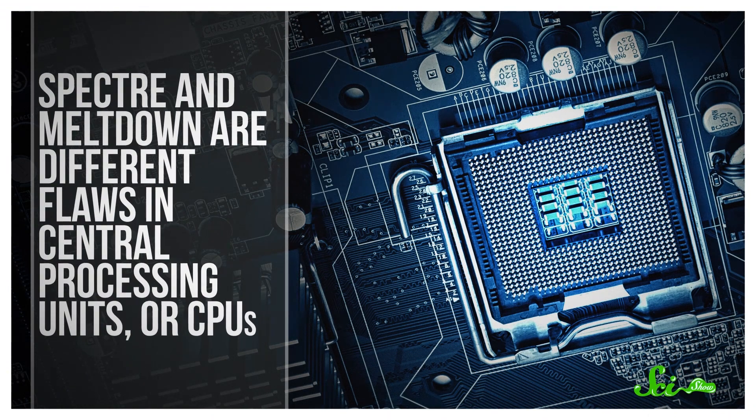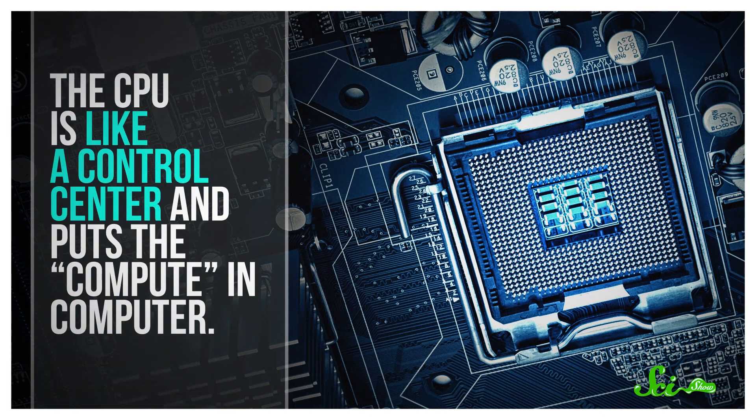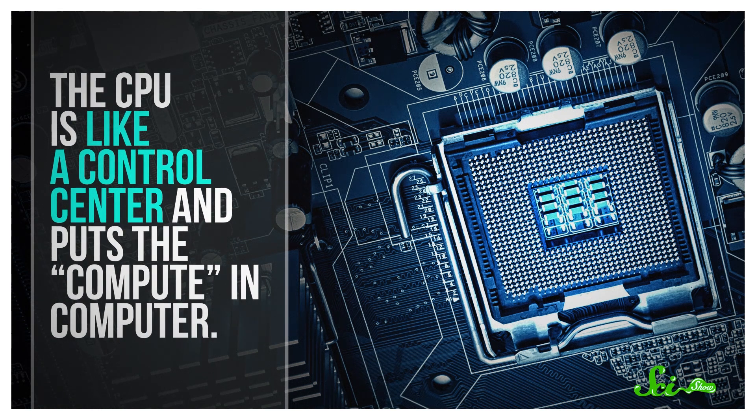Spectre and Meltdown are different flaws in Central Processing Units, or CPUs. A CPU is like the control center — it puts the compute in computer. Basically, it carries out instructions to make different programs work. These instructions can be things like simple math problems, or logic-related calculations, like comparing two numbers to check if someone has enough money to buy a plane ticket, and letting that transaction go through. So if you really boil it down, a CPU is essentially doing a few things over and over again.